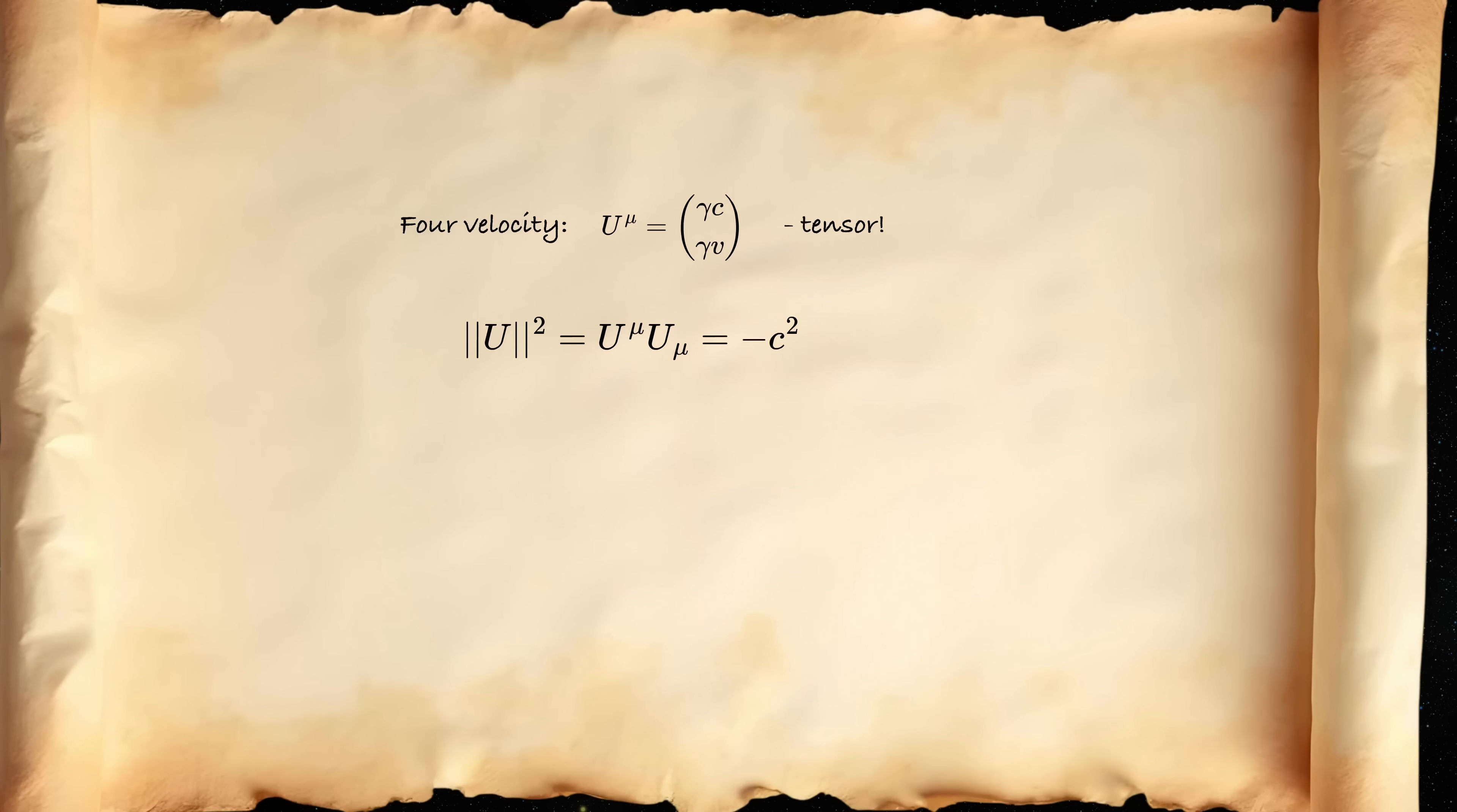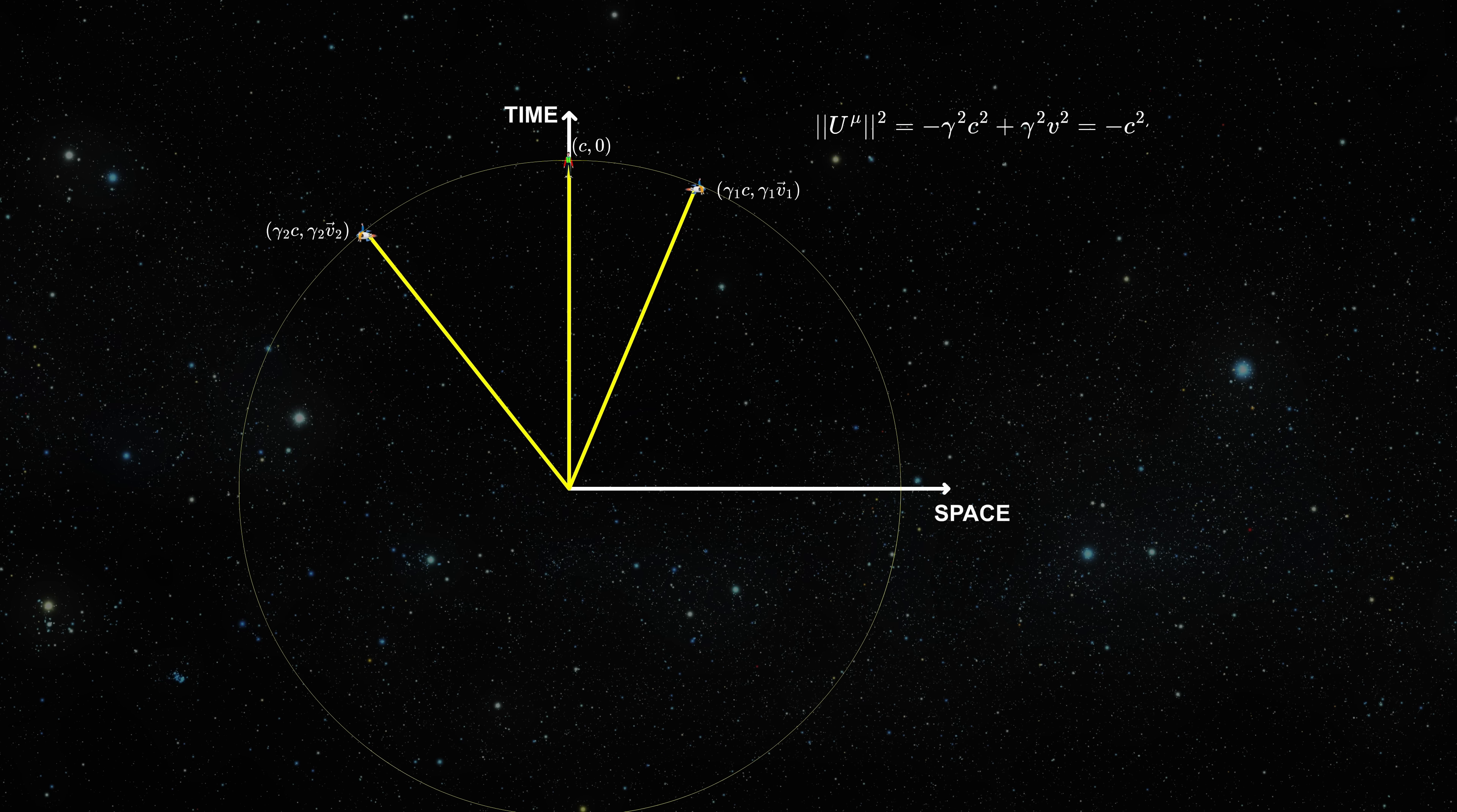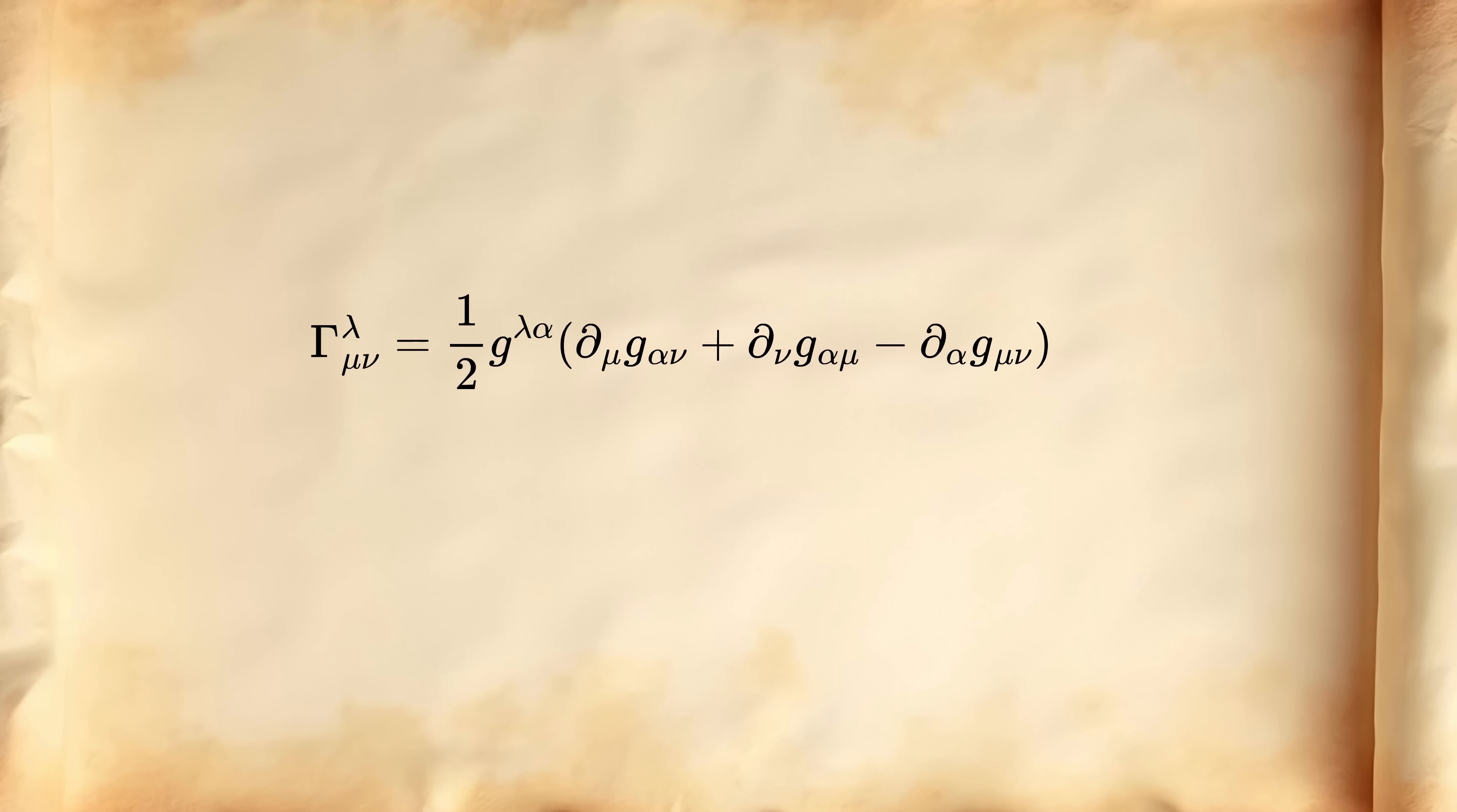And I say that we have four-velocity as tensor. So it has an invariant magnitude, which is the speed of light. So we all move with the speed of light through Minkowski space-time. The components of the four-velocity might change. You can move faster through space and slower through time, or the other way around, but the total velocity is still the same.